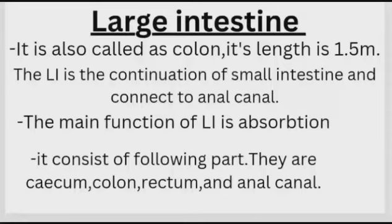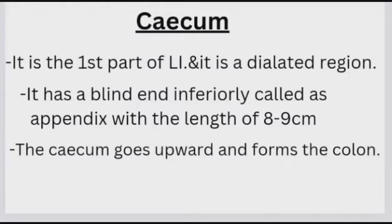The large intestine consists of the following parts: cecum, colon, rectum, and anal canal. The cecum is the first part of the large intestine and is a dilated region. It has a blind projection inferiorly called the appendix.